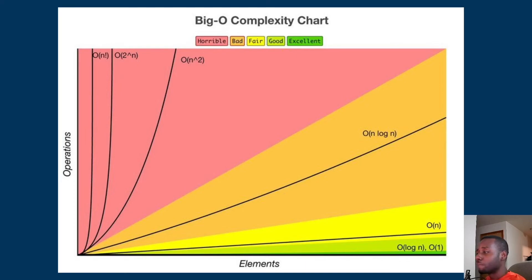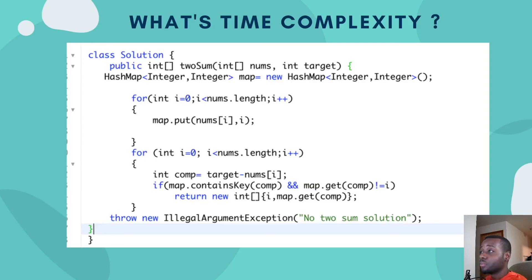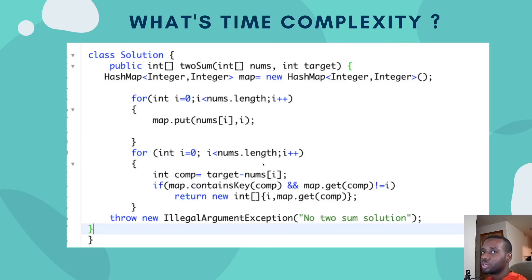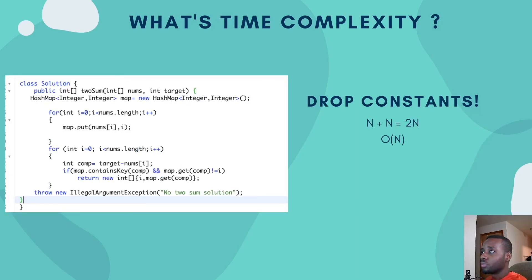Let's go through a couple of examples. What is the time complexity for this problem? Take a minute to think about it. We have a linear loop — O(n) — and then another linear loop — also O(n). So we have O(n) + O(n), which is 2n. In Big O notation, we drop constants and keep only the dominant term, so this simplifies to O(n).